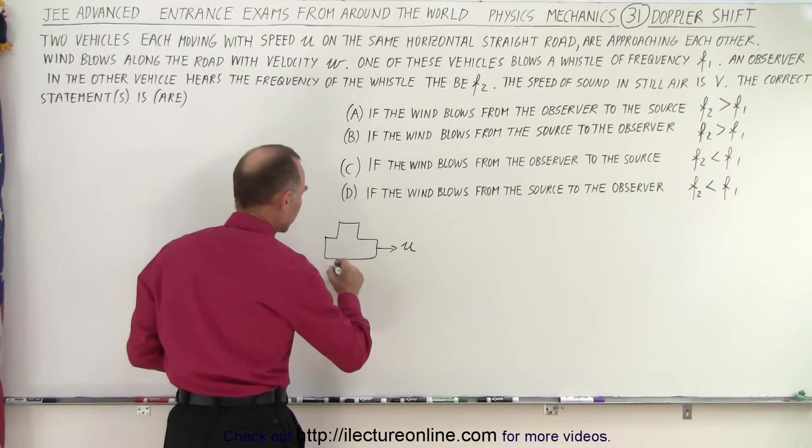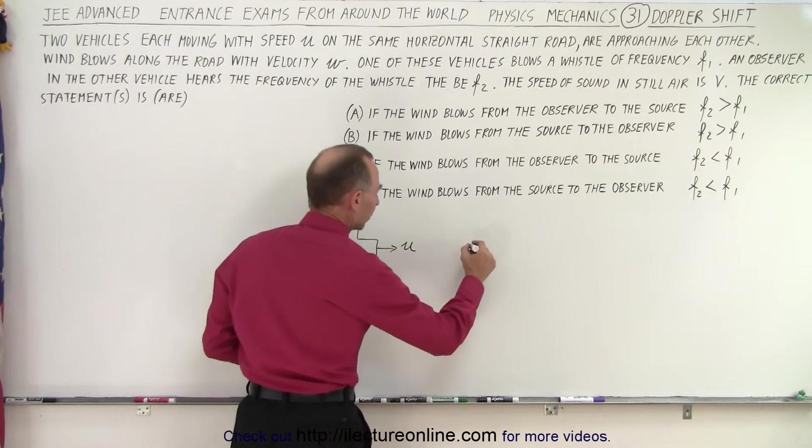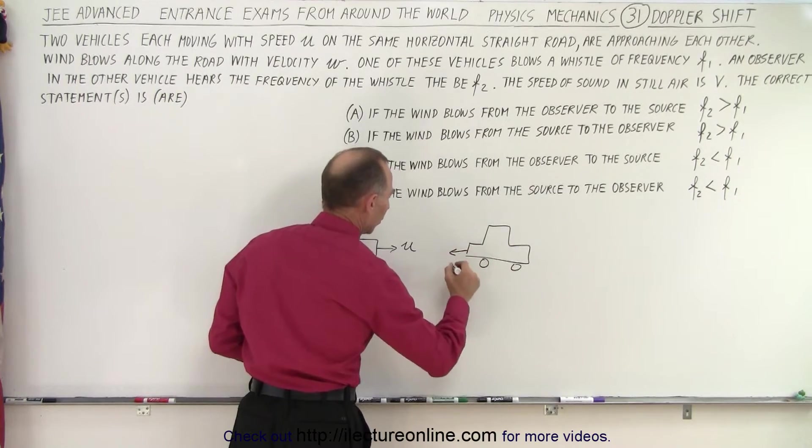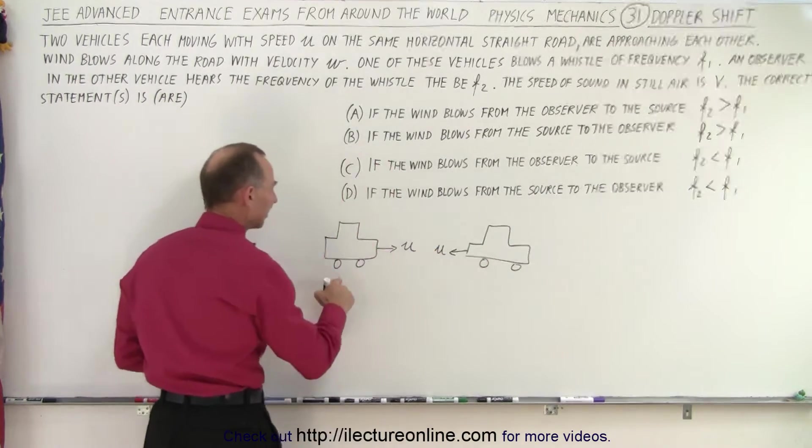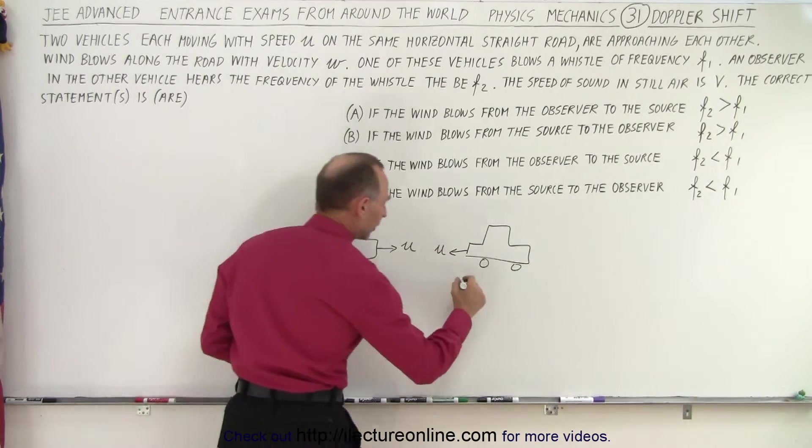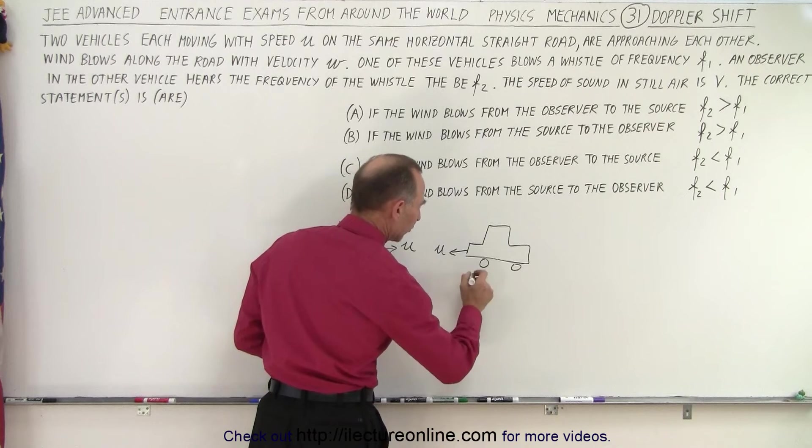Vehicle number one traveling this way with velocity U, and vehicle number two traveling this way with velocity U. So let's say that this vehicle is the source and this vehicle is the observer.